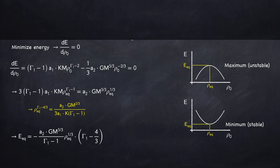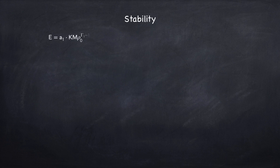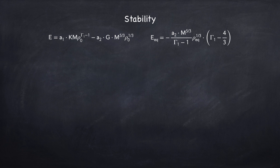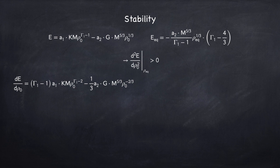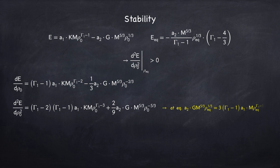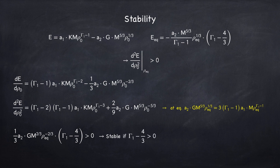So let's now find the criteria for stability. We have the energy of the star, we found the equilibrium energy, and now we have to set the second derivative at the equilibrium point to be greater than zero. We've already found the first derivative, so we take another derivative, evaluate it at the equilibrium point, and set it greater than zero. And so we find that a star will be stable if gamma1 minus 4/3 is greater than zero.